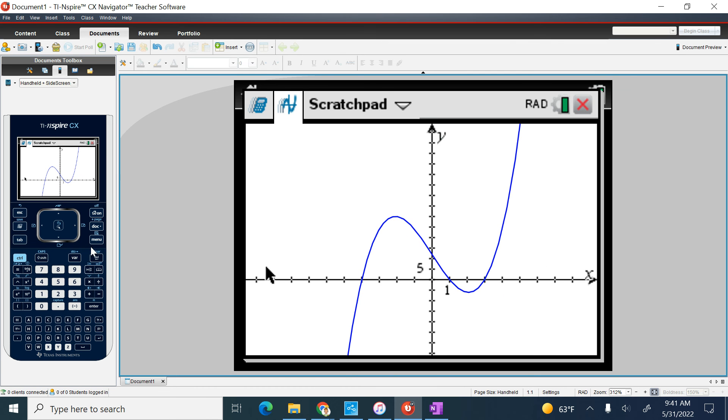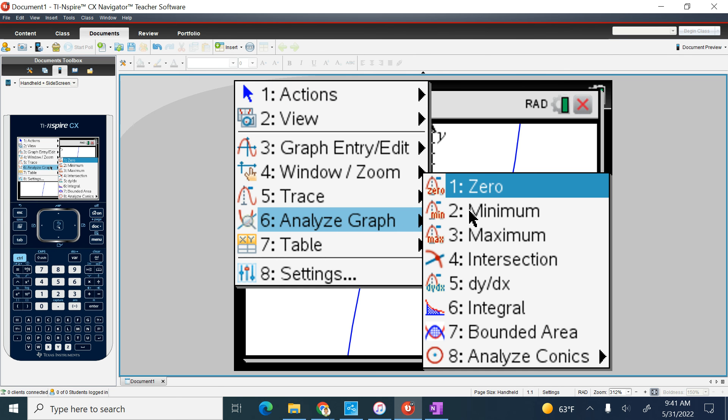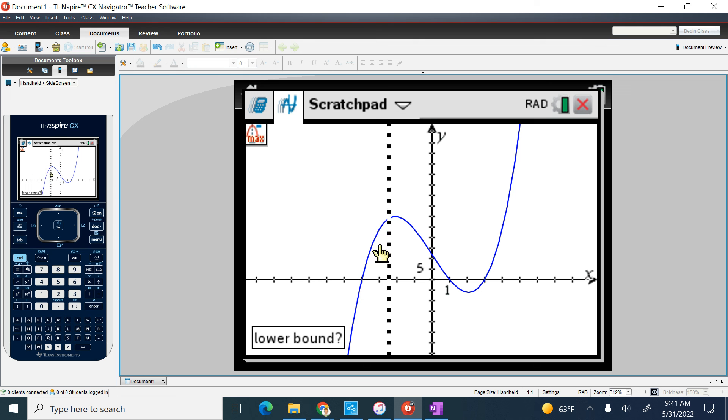Now I'm going to grab my max, my min, which works very similar to a zero. So I'm going to hit menu, analyze graph, and I'm going to do my maximum first because that's what was first. It doesn't matter which one you do first. I've got my little vertical dashed line, so I'm going to go, it says lower bound. I'm going to click somewhere to the left of that maximum.